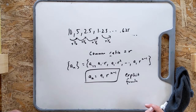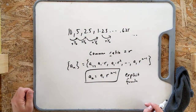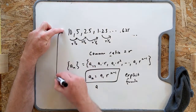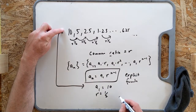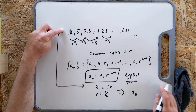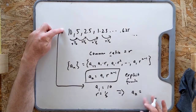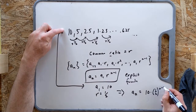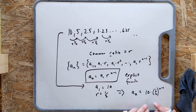Let me write the explicit formula for the examples I gave. Starting with the 10, 5, 2.5 one: a_1 is 10 and r is one-half. Therefore the explicit formula is a_n equals 10 times (one-half) to the n minus 1. Make sure you put the half in parentheses, otherwise it looks like it's 10 times a half rather than (one-half) to the n minus 1 — exponentials first, then times 10.